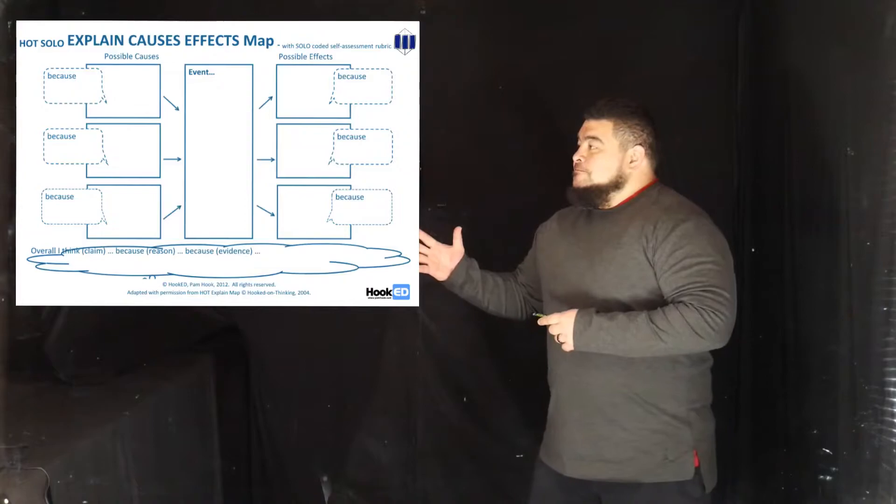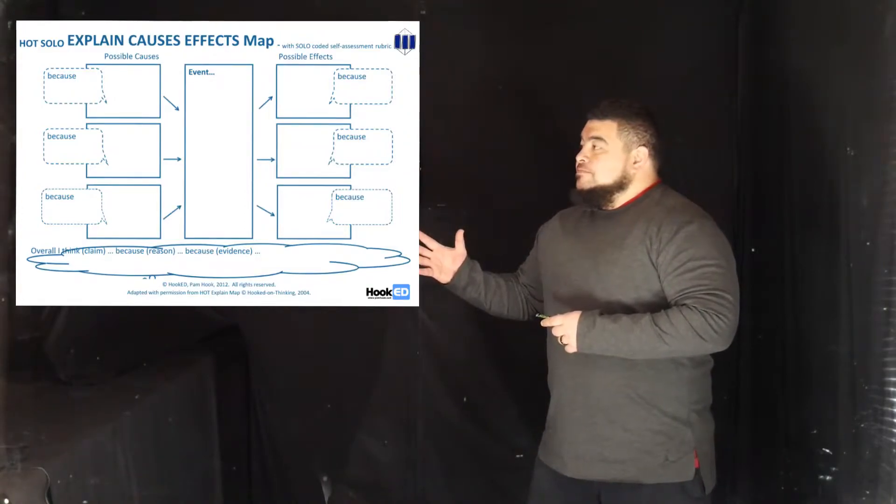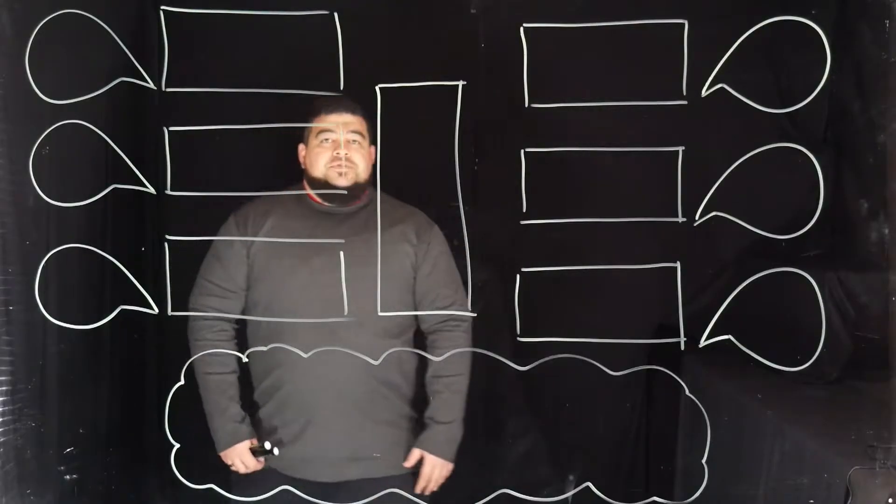Hi everybody, today we're going to be going through the hot map of cause and effect. This hot map is used to explain the causes or consequences of an event or other thing, and we'll go through it bit by bit and explain how it works. This hot map looks like this. Alright, let's get into it.